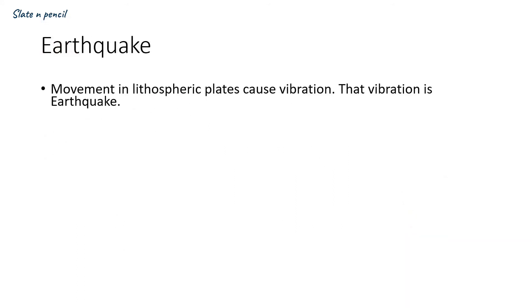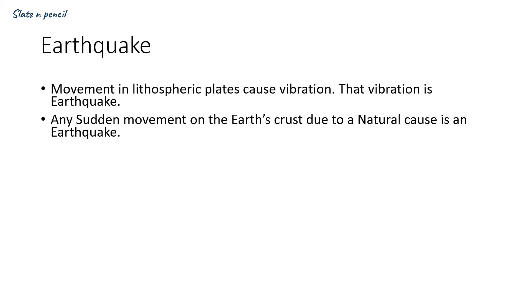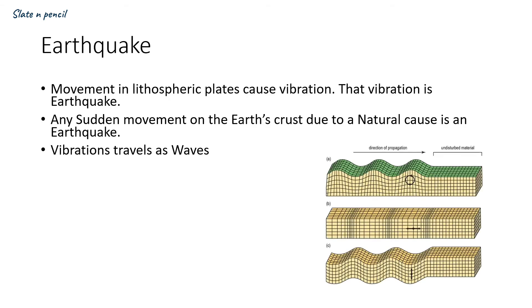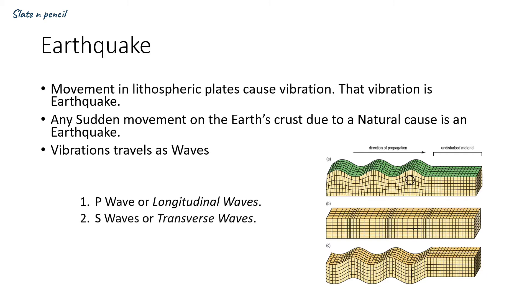What is an earthquake? Movement in the lithospheric plates causes vibrations, and that vibration is an earthquake. Any sudden movement on the Earth's crust due to a natural cause is an earthquake. Vibration travels in the form of waves. There are three types: P waves or longitudinal waves (shown as A in the diagram), S waves or transverse waves (shown as B), and L waves or surface waves (shown as C). L waves are the combination of P and S waves.